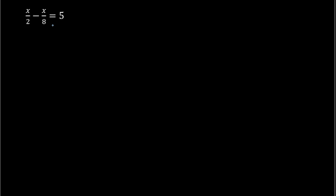The quick way to do this is to get rid of the fractions. And to make that happen, what I can do is find the least common denominator, and then multiply everything by that. So looking at 2 and 8, the least common denominator would be 8.